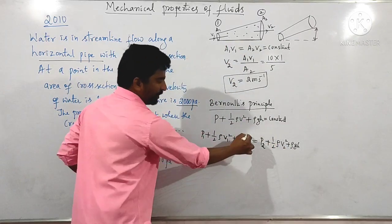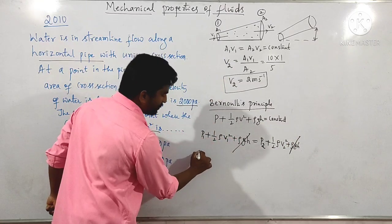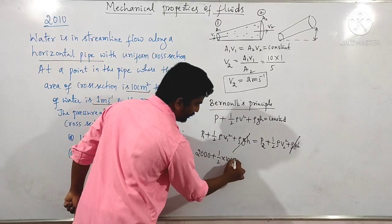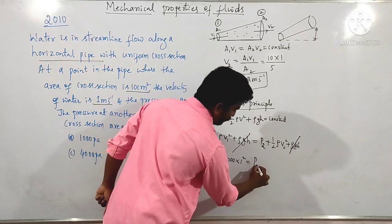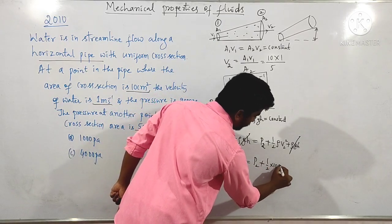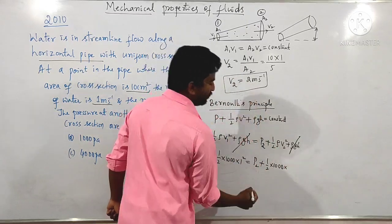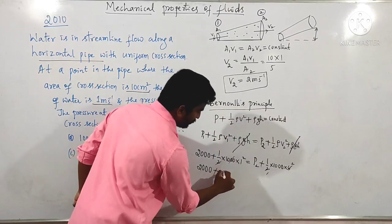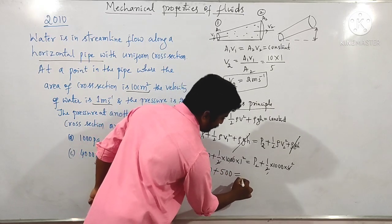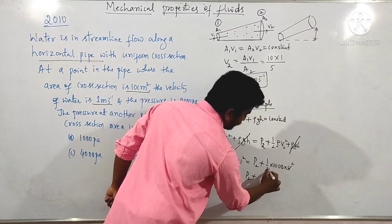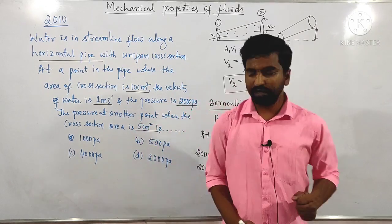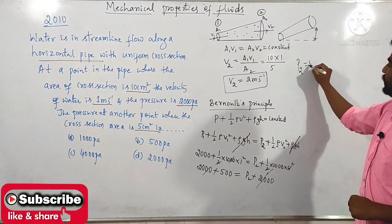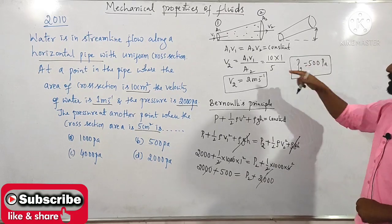We need P2. P₁ + ½ρV₁² = P₂ + ½ρV₂². So 2000 + ½ × 1000 × 1² = P₂ + ½ × 1000 × 4. That gives 2000 + 500 = P₂ + 2000. Therefore P₂ = 500 Pascal. This is the concept regarding this question.